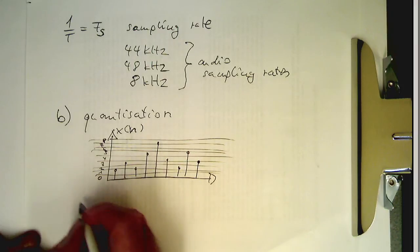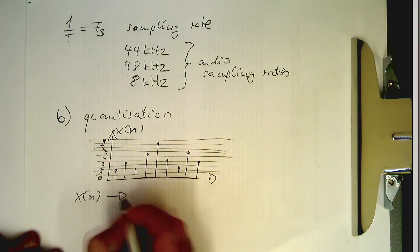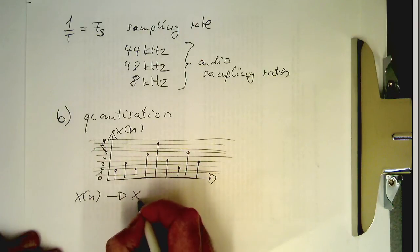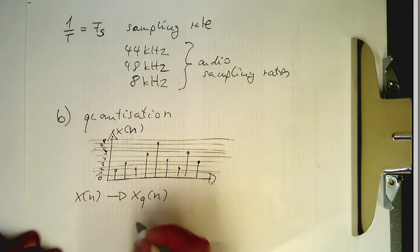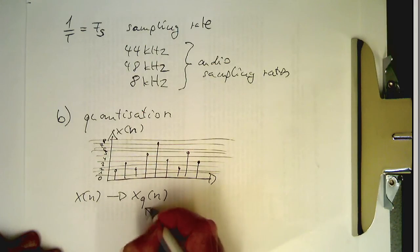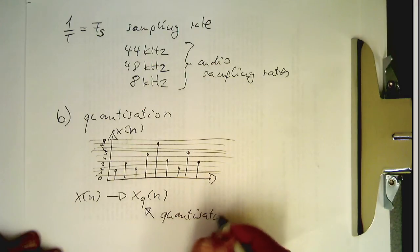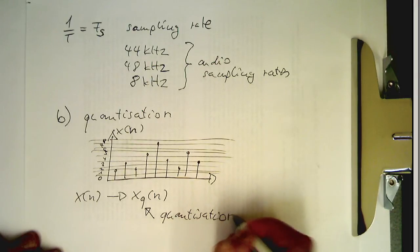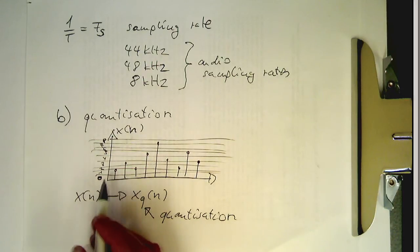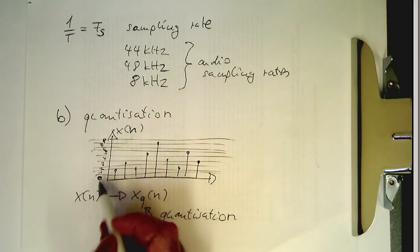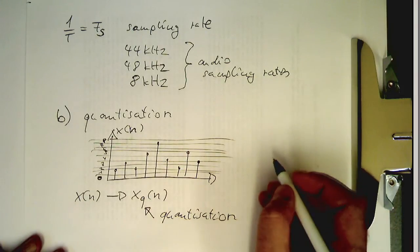And in terms of notation we could write that this x(n) is transferred into something like xq(n) and the q defines the quantization. Obviously the finer this is the better. So classical quantization steps are for example...